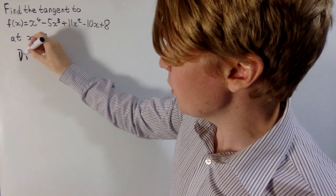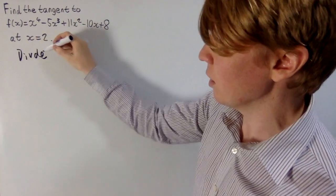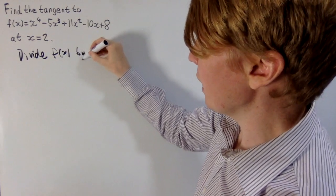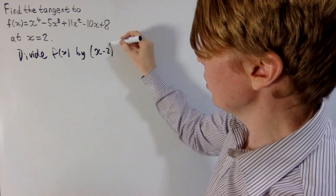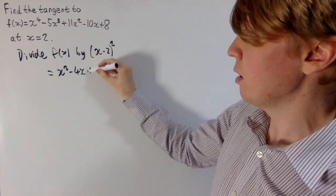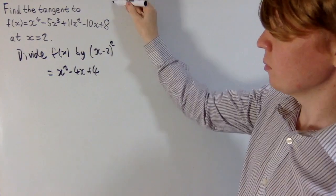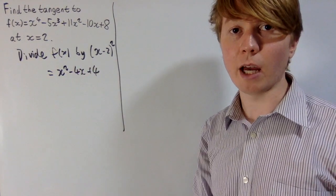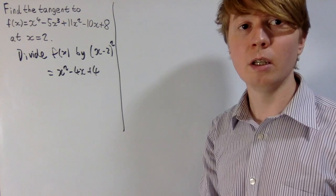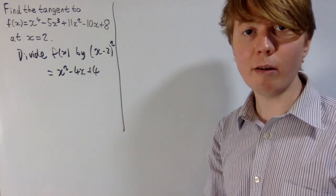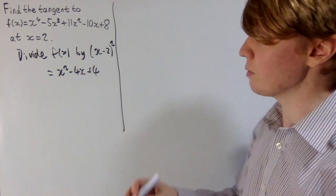So all we need to do is basically we're going to use polynomial long division to divide f of x by x minus 2 all squared, which when you expand it this is x squared minus 4x plus 4. So we'll dive straight into this example and it'll turn out that basically the remainder you get when you do the polynomial long division gives you the equation of the tangent at this point x equals 2. And we'll have a look into the theory behind it once we've done this first example.